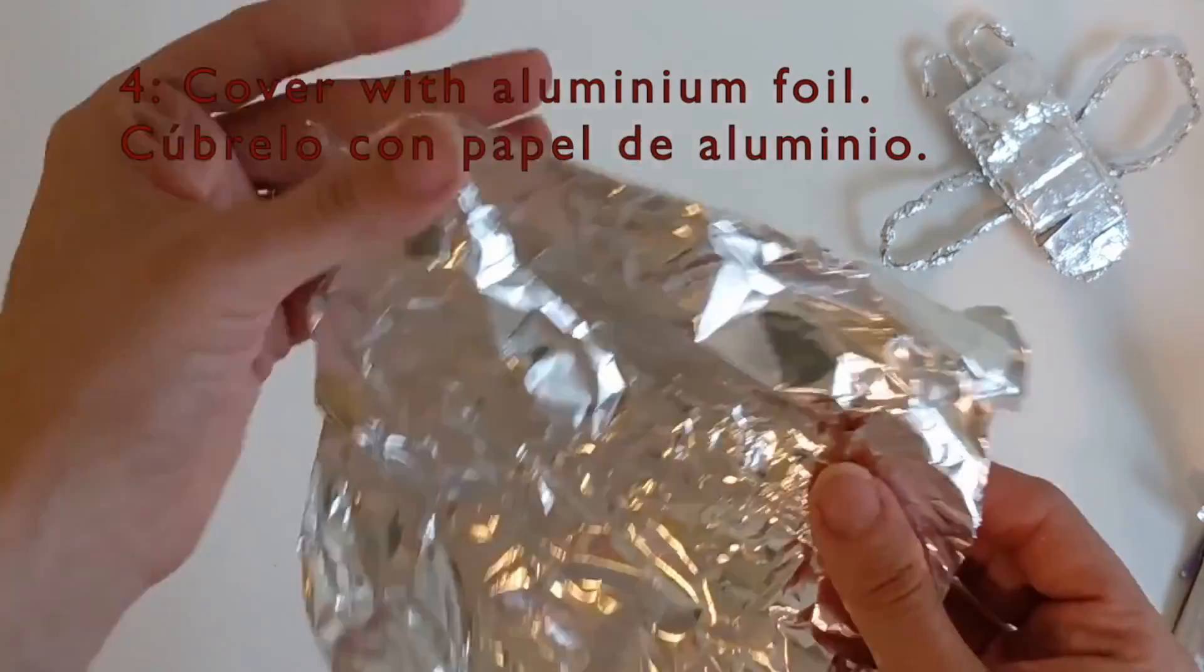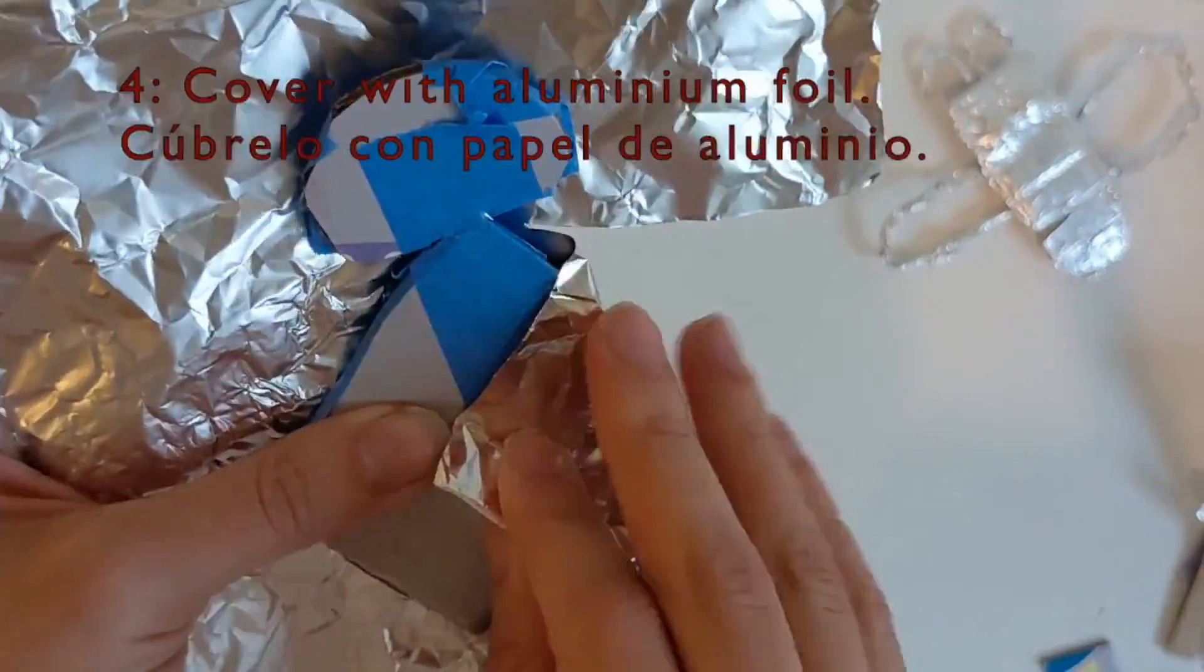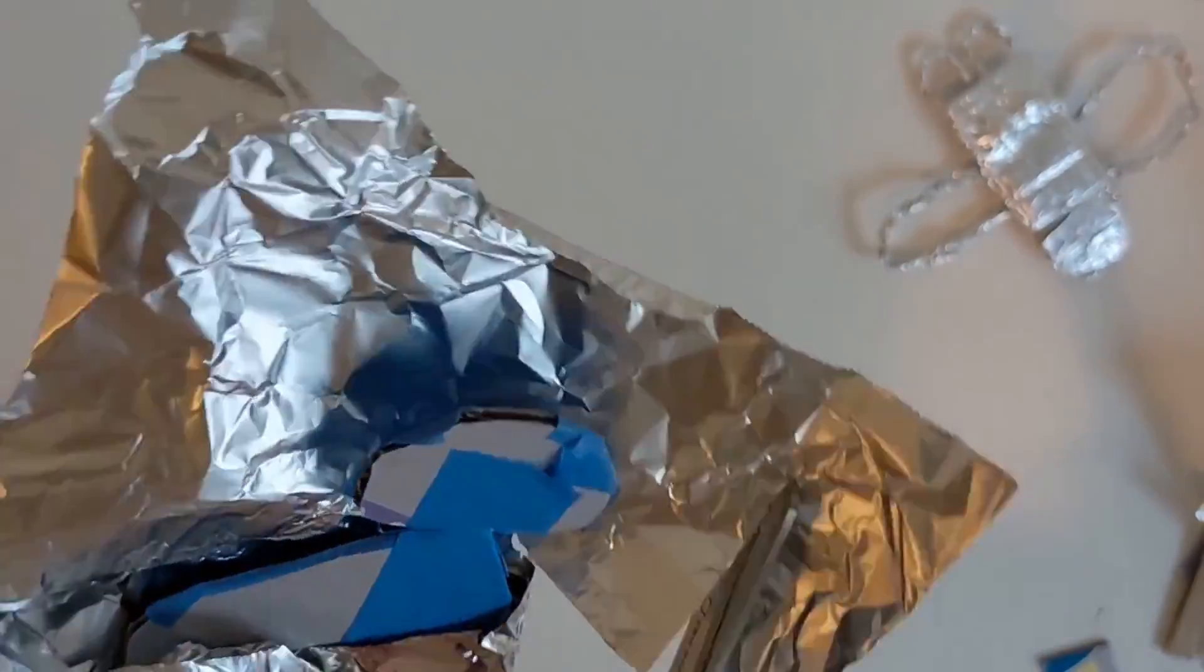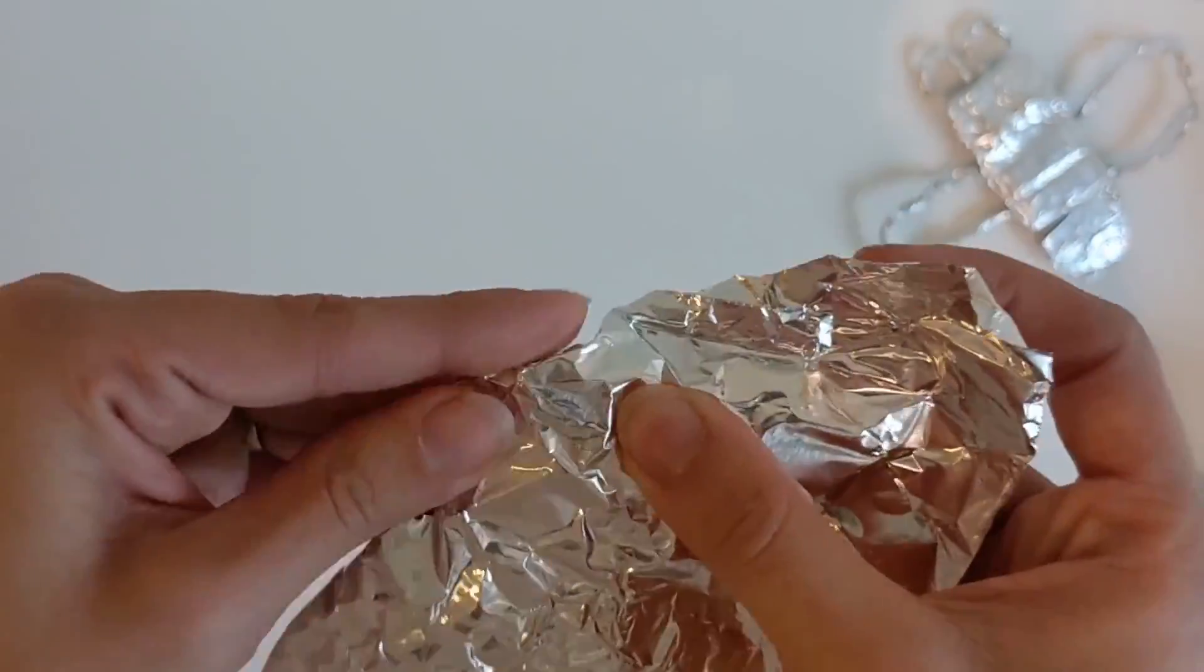Now we'll cover our cardboard using aluminum foil. Make sure that your sheet of foil is bigger than your cardboard shape. Wrap the foil around the cardboard, snug but not too tightly. You can cut off the excess foil as you go.